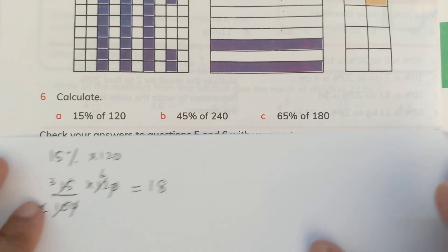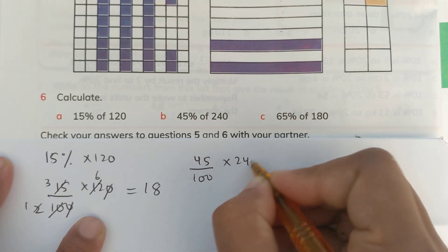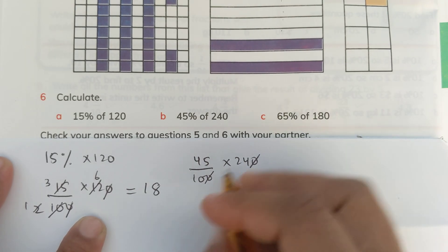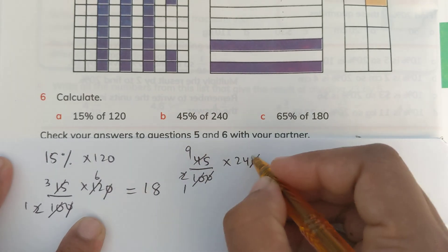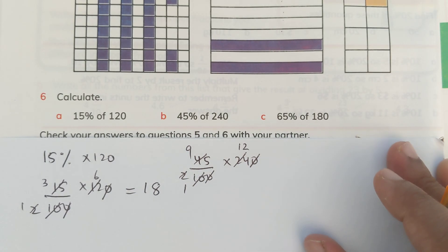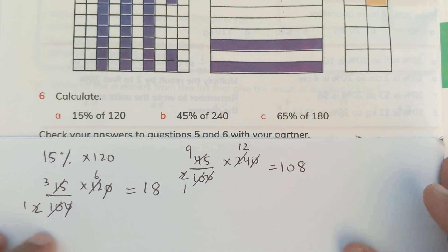Similarly, 45% of 240, we will write 45 over 100 multiply by 240. 0 cuts 0, 5, 2's are 10, 5, 9's are 45, 2, 1's are 2, 2, 12's are 24 and then we will multiply 12 with 9 which is 108. So, it's 108. That's all. How easy it is, you see?